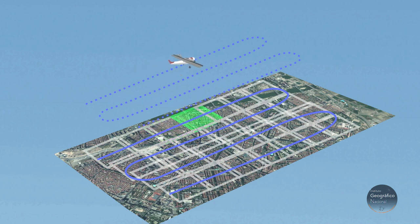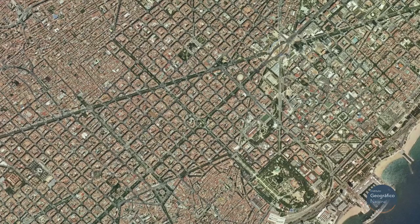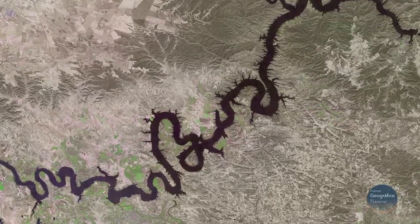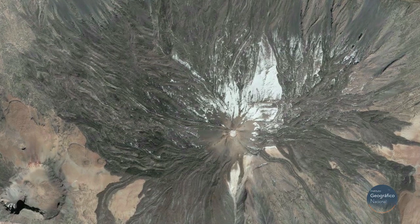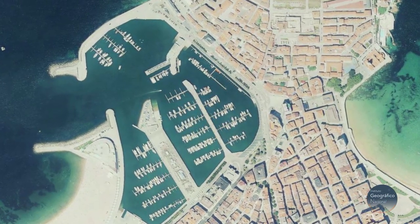Airborne sensors are installed on aircraft. As they fly at a lower altitude than satellites, they enable the capture of more detailed information about the Earth's surface. The most common airborne passive sensor is the metric camera, which allows photogrammetric flights. These flights consist of making several passes over the ground so the photographed surface appears in multiple images. With them, we can generate orthophotographs, which are photographs in an orthogonal projection that allow accurate measurements without deformations caused by the perspective of the camera.